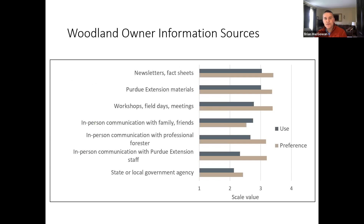Another thing to consider is information sources. In extension we're providing information in some fashion, and there's been a lot of work on use, preference, trust, and those kinds of things. We surveyed participants in our eight-week forestry short course and asked about information use and preference. Not surprisingly, traditional things — newsletters, fact sheets, extension workshops — were the higher-used items. Social media and similar channels were much lower on the list. Given that woodland owners are generally much older on average, it's not too surprising what they prefer when it comes to information sources.